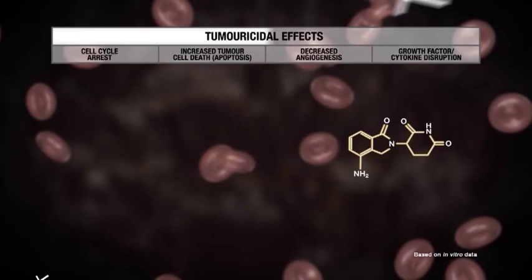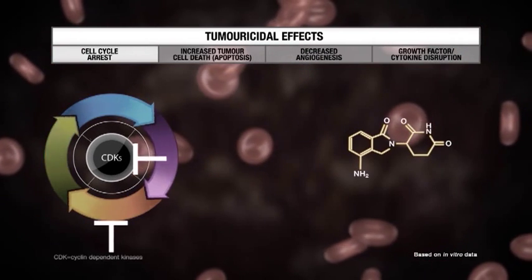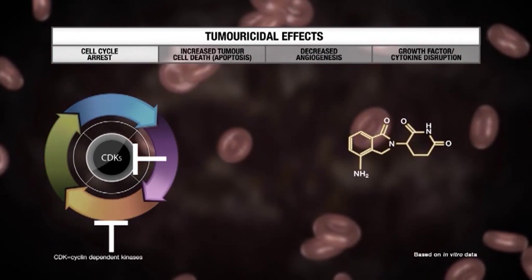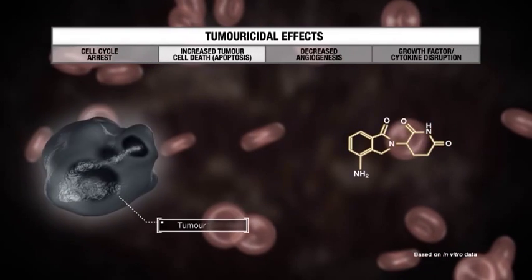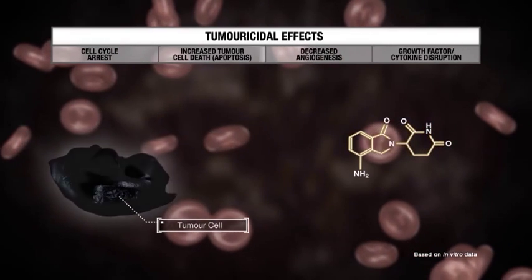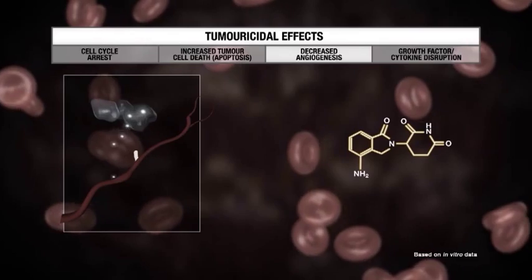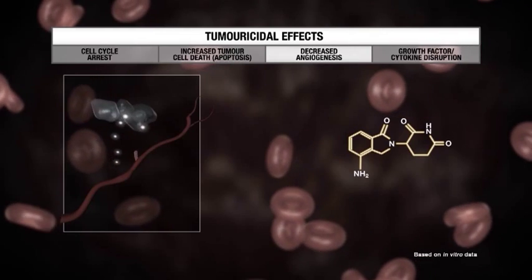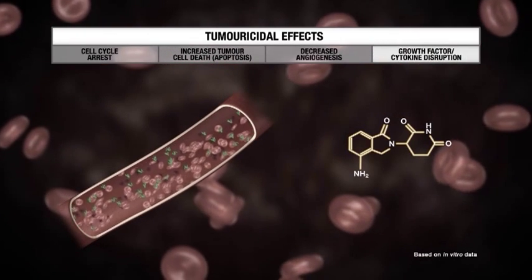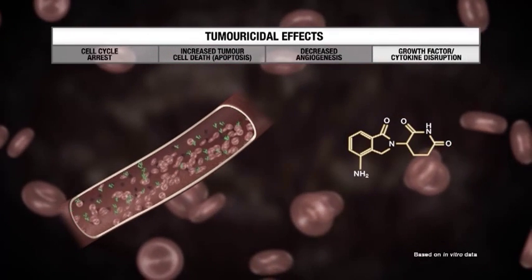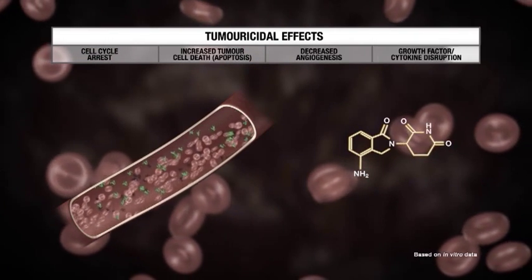The tumouricidal effects of Revlimid include the induction of cell cycle arrest, the facilitation of apoptosis of tumour cells, reduction in angiogenesis and stromal cell support, and disruption to the production of factors that promote myeloma cell survival and proliferation.